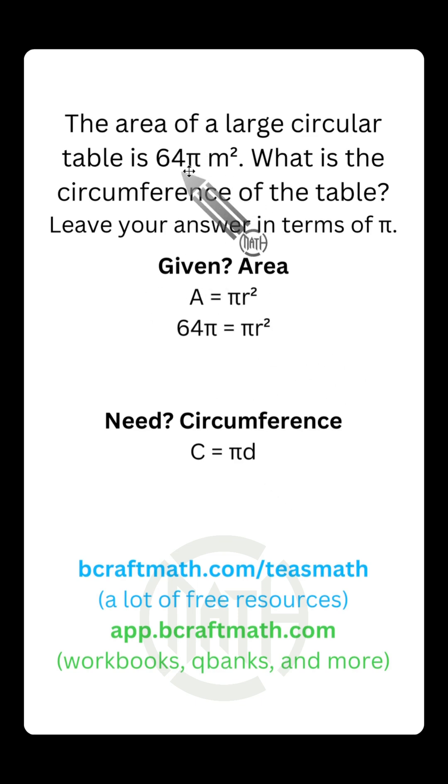But since we're given the area, let's take that 64π and replace the A, the area, with 64π. So we have 64π equals πr². I'm just bringing the formula on down.